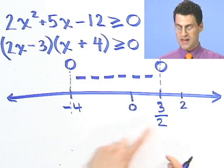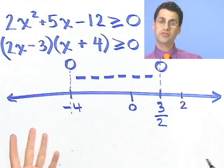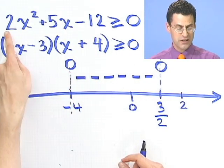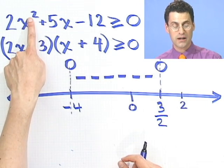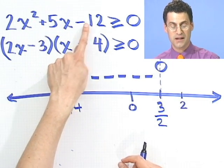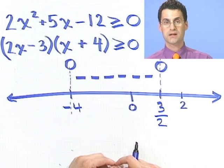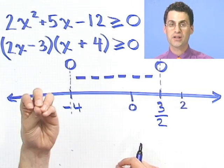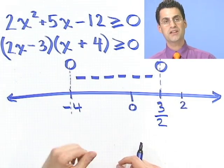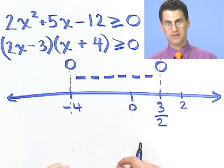So I'll pick 2 as my point, and I'm going to plug 2 into here. Now you could plug in 2 into one of two places. You could either plug it into the original thing, 2 times 2 squared plus 5 times 2 minus 12, and compute what that number is. All you care about is if it's positive or negative. But I'll tell you what I do. I'm lazy. And remember, the good mathematician is the lazy mathematician.